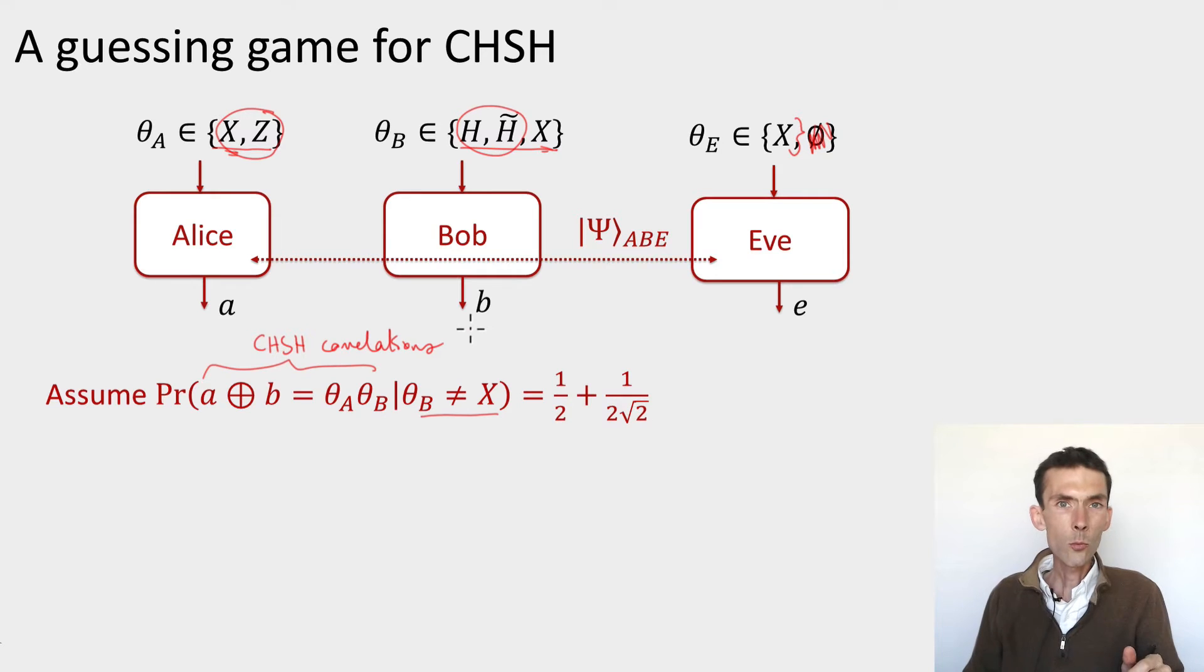And let's assume first that it's equal to the optimal winning probability in the CHSH test. What can I conclude? Well, in that case, from the analysis that we saw a couple modules ago, I know what the state of these devices must be in order to produce such inputs. In particular,